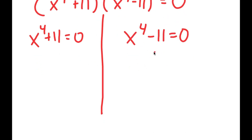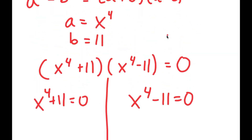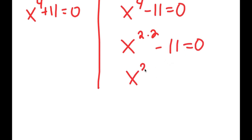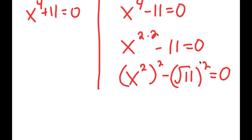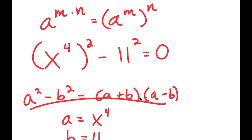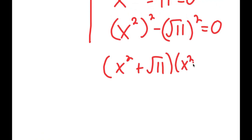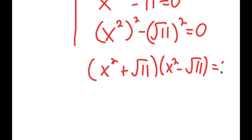We are still not done yet. People might think to just add 11 and take the fourth root, but we're going to do the same thing we did with the original equation. I'll rewrite x to the power of 4 as x to the power of 2 times 2, which becomes x to the power of 2 to the power of 2. And 11 I'll rewrite as the square root of 11 squared. So now I can use the difference of squares property again, giving x squared plus the square root of 11, times x squared minus the square root of 11, equals 0.